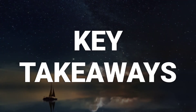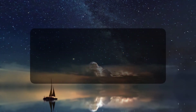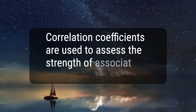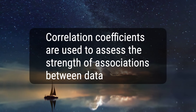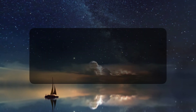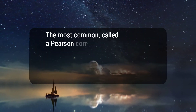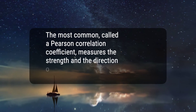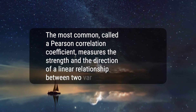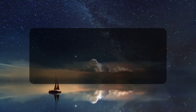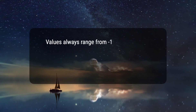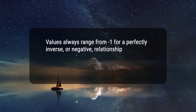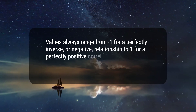Here are four key takeaways. 1. Correlation coefficients are used to assess the strength of associations between data variables. 2. The most common, called a Pearson correlation coefficient, measures the strength and the direction of a linear relationship between two variables. 3. Values always range from minus 1 for a perfectly inverse, or negative, relationship to 1 for a perfectly positive correlation.